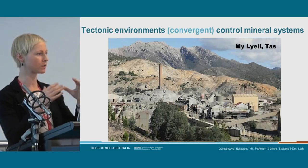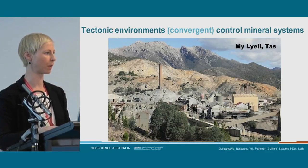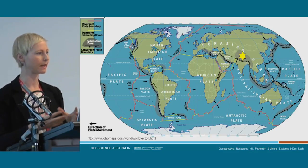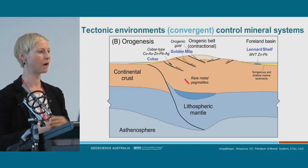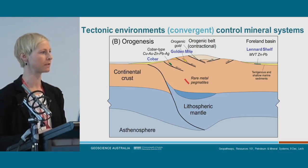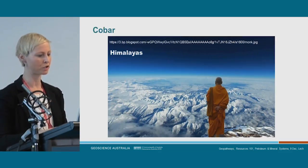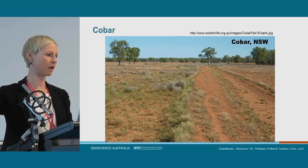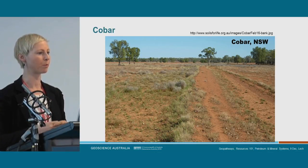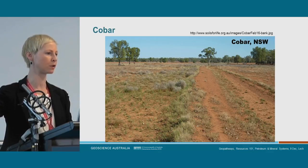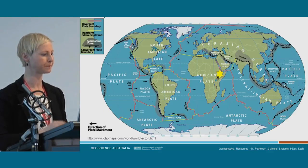Australia also had tectonic settings similar to the Himalayas, where continental crust pushed against more continental crust until it buckled up into huge mountain ranges, and mineral deposits formed in those environments — like Cobar, the Golden Mile, and Leonard Shelf. Here we have the Himalayas, and here we have Cobar — no huge mountain ranges anymore, but by taking the mineral systems approach and understanding that tectonic history at a regional scale, we can go to Cobar and find mineral deposits without needing those big mountain ranges.